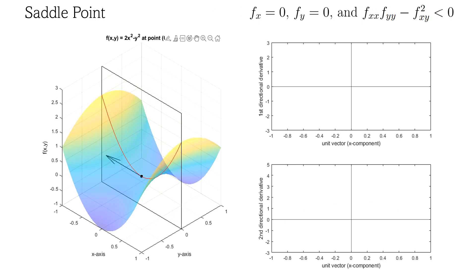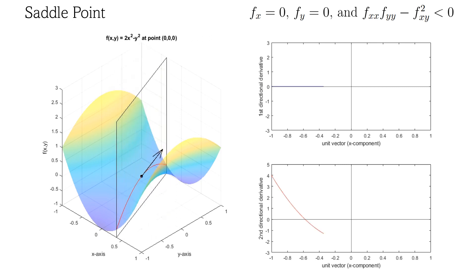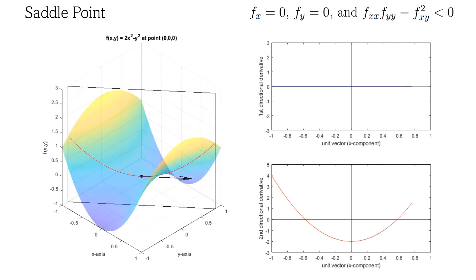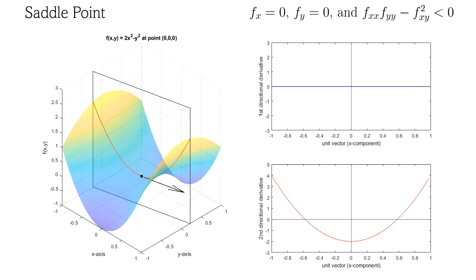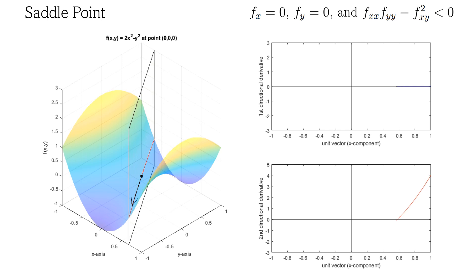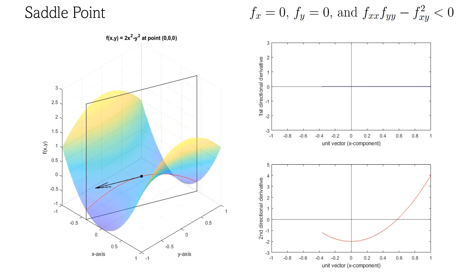For the next critical point example, the second derivative test will result in a saddle point, because f sub xx times f sub yy minus f sub xy squared is less than 0. Once again, the directional derivative is 0 in all directions, confirming that we are at a critical point. However, this time, the directional concavity is sometimes positive and sometimes negative, indicating a saddle point. This occurs because the discriminant discussed earlier is positive, and thus two real roots exist.